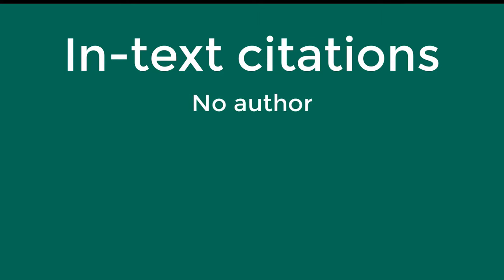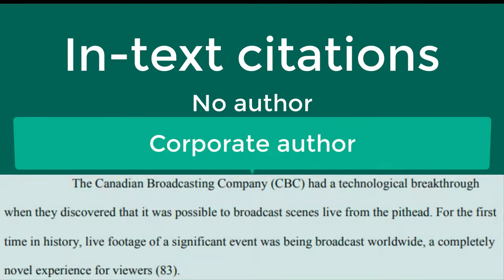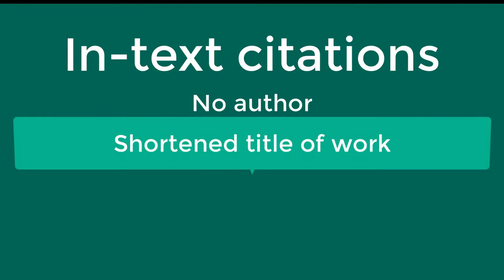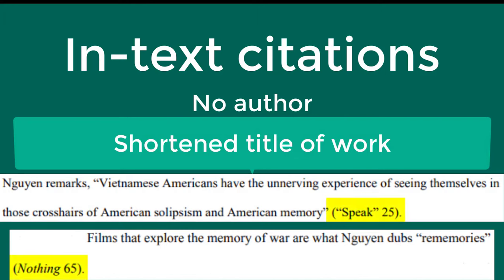The resource you are citing might not have an individual person listed as an author. If the source has a corporate author, use the name of the corporation and the page number in the citation. If there is no known author, use a shortened title of the work instead of an author's name. Put the title in quotation marks if it's a short work such as an article, or italicize it if it's a longer work such as a book, play, or movie, and provide a page number if available.